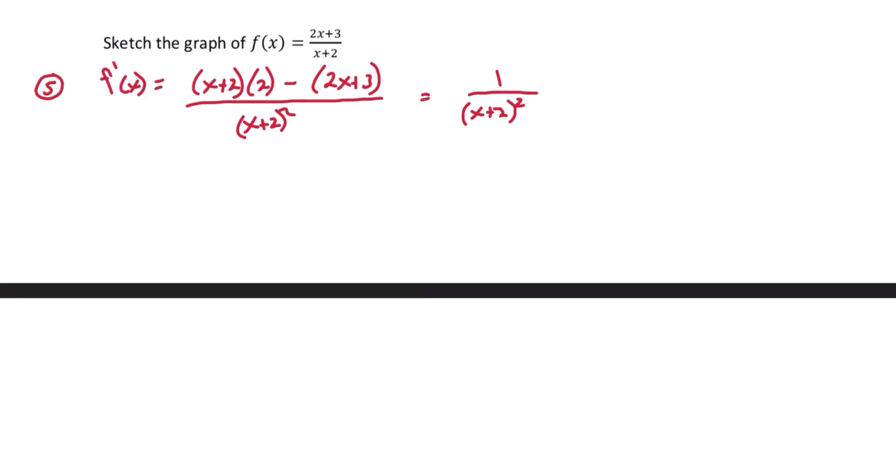We want to set this equal to 0 and solve. Solving does nothing for us in this case. So we'll also look to see where the first derivative is undefined. And it looks like the first derivative is undefined when x is equal to negative 2. So we'll use that value to break up our interval. We want to be to the left of negative 2 and to the right of negative 2.